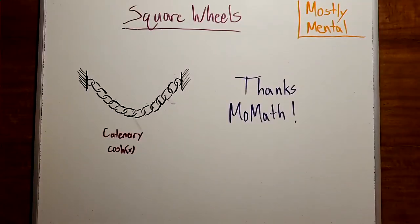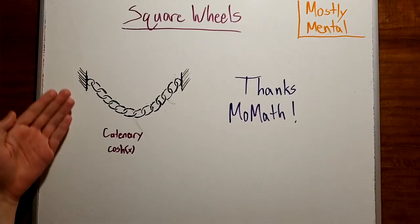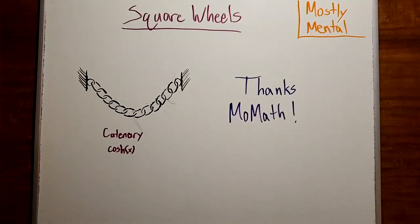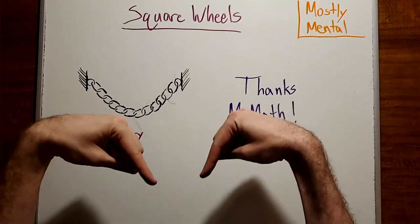The hyperbolic cosine actually shows up in another interesting place. It's the shape of a hanging chain or rope, the catenary curve. Why do we get the same shape? I'll leave that as an exercise for you. I'd love to see your proofs in the comments below.